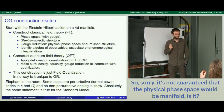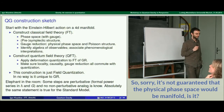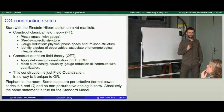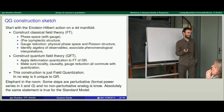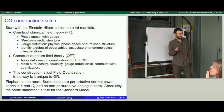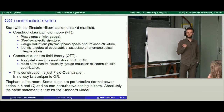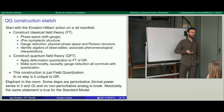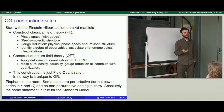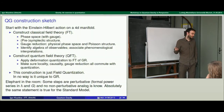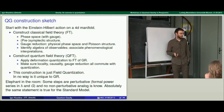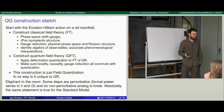It's not guaranteed that the physical phase space would be a manifold. Well, it's a topological space, and it is known that away from highly symmetric metrics — which are conical singularities — it's almost a manifold with a few exceptions. We can deal with conical singularities as well. So it's a technical difficulty, not a conceptual one.